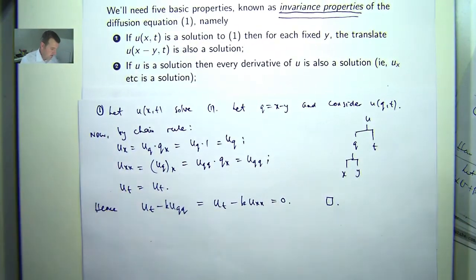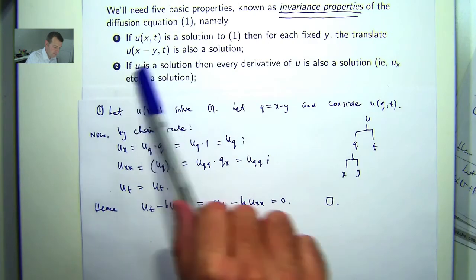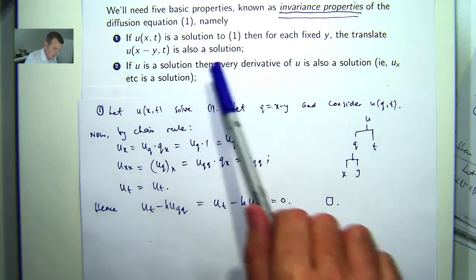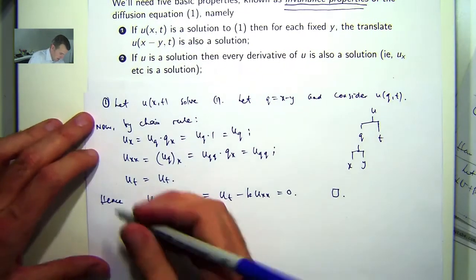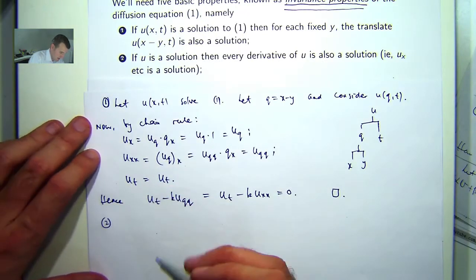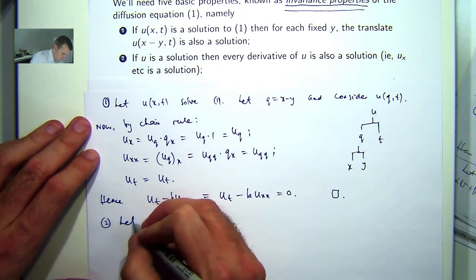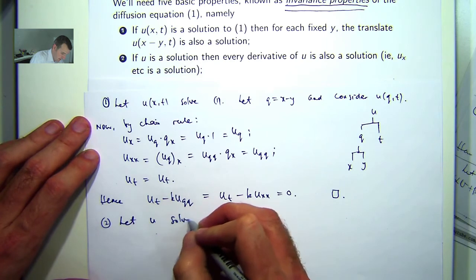The second property that we're going to talk about is the following. If u is a solution to 1, then every derivative of u is also a solution. So for example u_x is a solution, u_t, u_xx, etc. So let's discuss how we prove that.